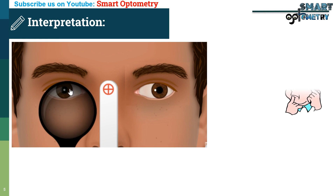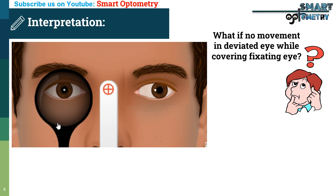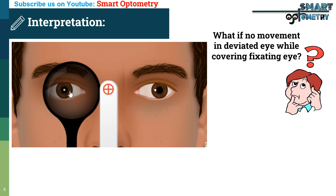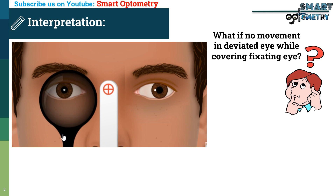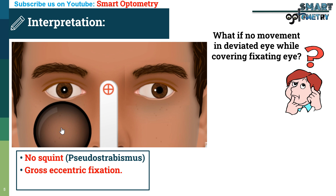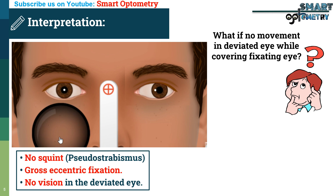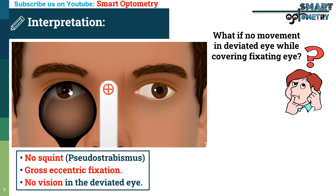Now, what if the eye seems deviated but after covering the fixating eye there is no movement in the deviated eye? No movement of the uncovered eye on covering the seemingly fixating eye indicates any of the following: no squint — it may be pseudostrabismus; gross eccentric fixation, where the patient may develop a secondary deviation; or no vision in the deviated uncovered eye — if there is no vision in the deviated eye, the patient won't be able to see the target and take fixation.